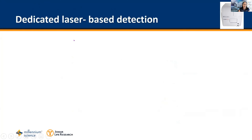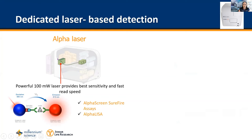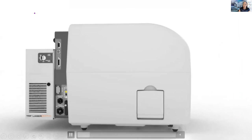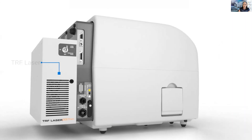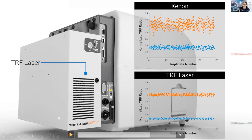Another feature in the Neo2 and the Citation 5 is a dedicated Alpha laser, allowing ultra-fast sensitivity and speed for AlphaScreen assays. You can also build in a TRF laser in the Neo2 — a 337 nm nitrogen laser — for assays including TRF, FRET, HTRF, LANCE, and AlphaScreen. Using the TRF laser provides very tight data with beautiful Z-prime scores, and the signal is actually six times greater compared to a xenon light source.